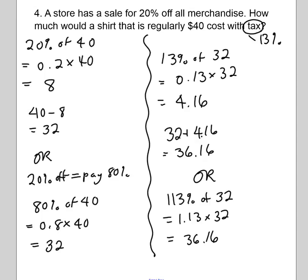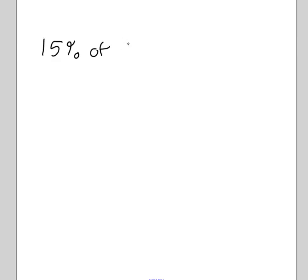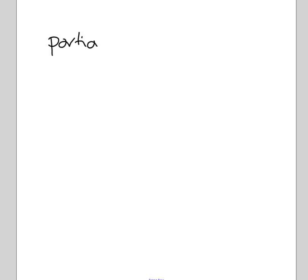Those are just some examples of applications of percent. We did some work with this last year and we'll be doing more this year. The key takeaways are two things: whenever you have something like '15 percent of a number,' always turn the percent into a decimal — 'of' means to multiply. The other thing to keep in mind is the formula: portion divided by total times 100 equals the percent.